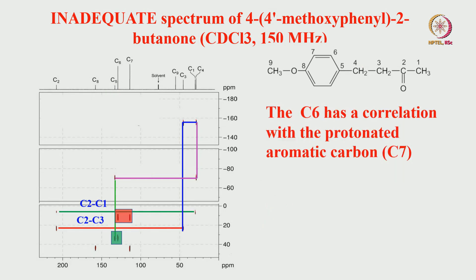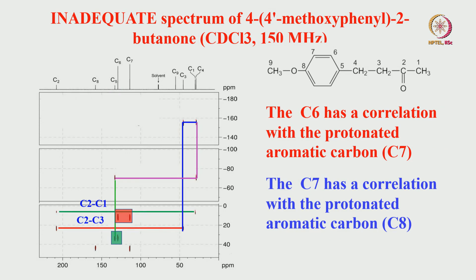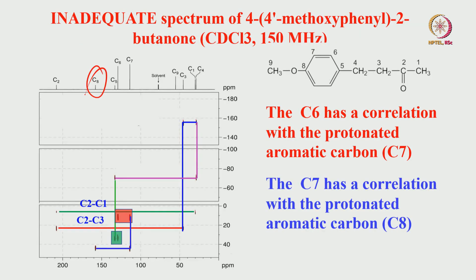C5 is also correlating to C7, which has a correlation with the protonated carbon C8. C7 correlates to C8. So, starting with C=O, we could assign most of the carbons - tracing it out very easily. C6 correlates with C7, C7 correlates to C8. The only carbon not correlating to anything is C9, because there is no directly attached next carbon adjacent to it. That is where C9 sits - it is an isolated peak.